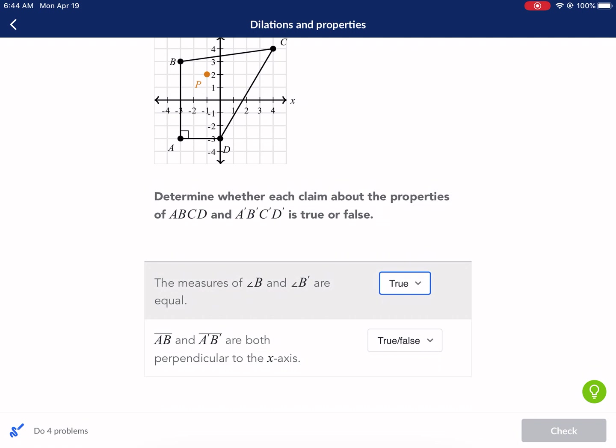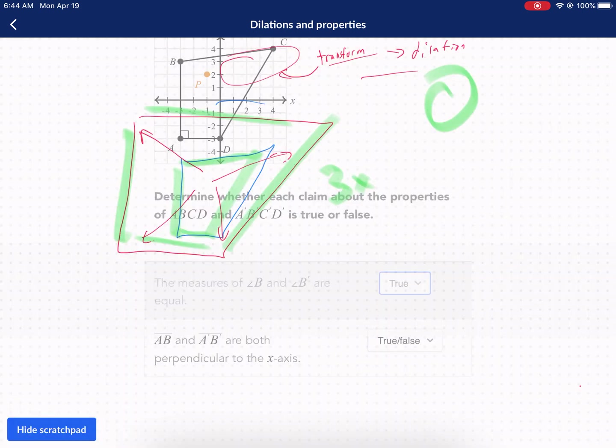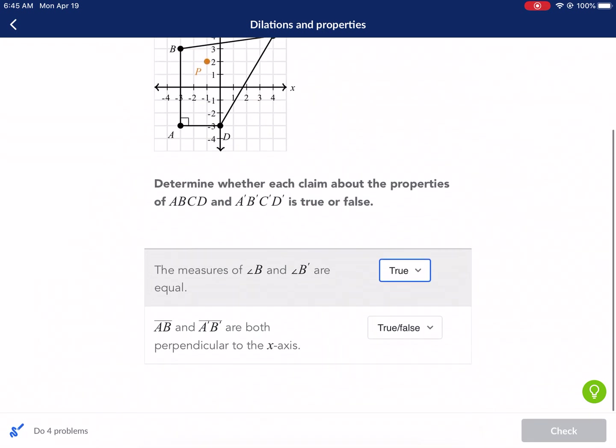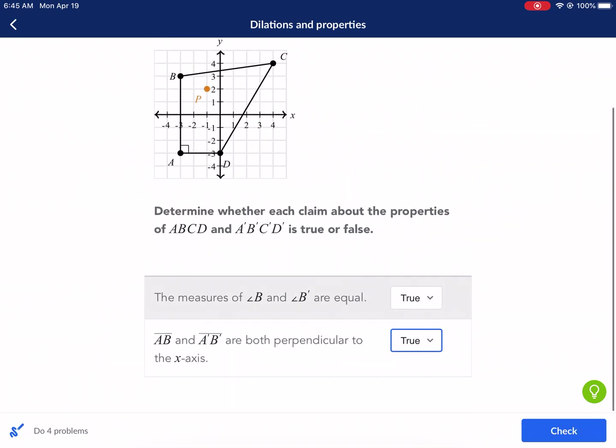AB and AB prime, those two segments, are both perpendicular to the x-axis. Let's go ahead and do some erasing here. As we look in here, AB is perpendicular to the x-axis, which is here. It's a vertical line. So as we expand it, the same thing is also going to be true. It's going to stay vertical, so that is true. It's going to stay perpendicular.